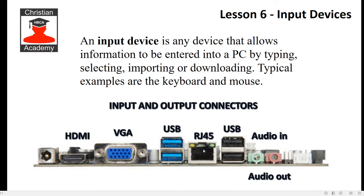The RJ45 is a data connection — it looks like a telephone cable — and you plug it in to connect to your router or local network to share data or get onto the internet if you're not using wireless. Then there's audio in and audio out: you plug a microphone into the line-in or mic-in, and for speakers you plug into the audio-out port. This diagram is applicable to both input and output devices, but for this section understand that an input device allows information to be entered into a PC by typing, selecting, importing, or downloading.